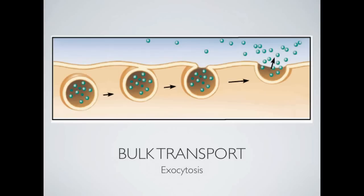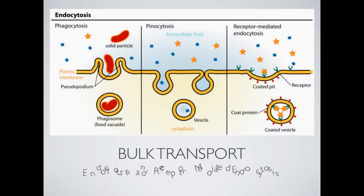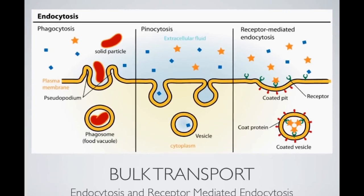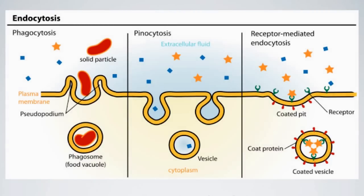Our last topic is endocytosis — when your body needs to take in something too big for diffusion. One form is phagocytosis, which happens with really big molecules. The cell, usually an amoeba, recognizes the particle, sticks out its pseudopodia, gives a big hug to the molecule, and pulls it inside. It pinches off as a vesicle that travels into the cell, where lysosomes hook to it and digest it, or the particles are used somewhere else in the cell.